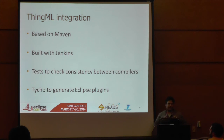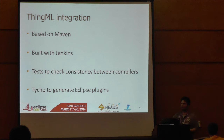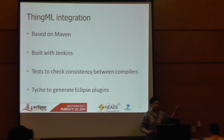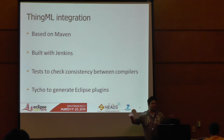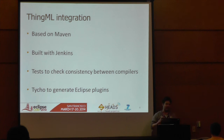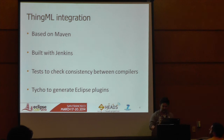On integration: the project is defined as a set of Maven projects built with Jenkins. Every time we commit, we trigger a build on a server. We also have tests that check that the Java code generated from ThingML is equivalent to the C code generated from ThingML. We use this to generate all the Eclipse plug-ins and update sites, so you can receive updates directly within the Eclipse IDE.